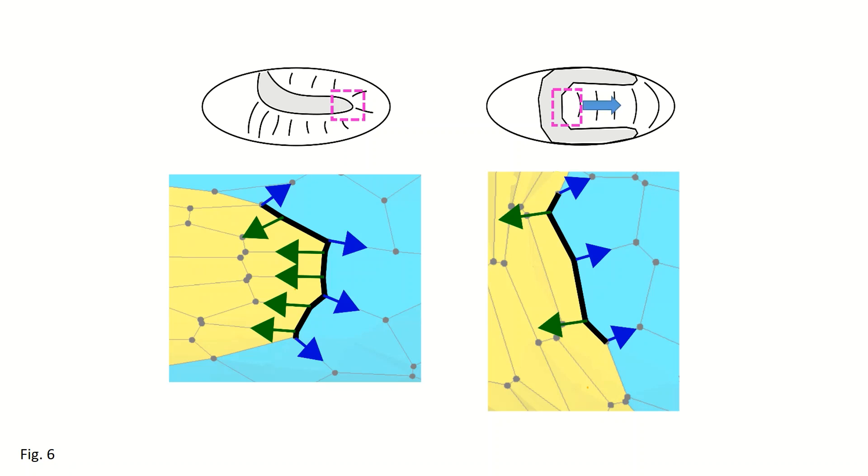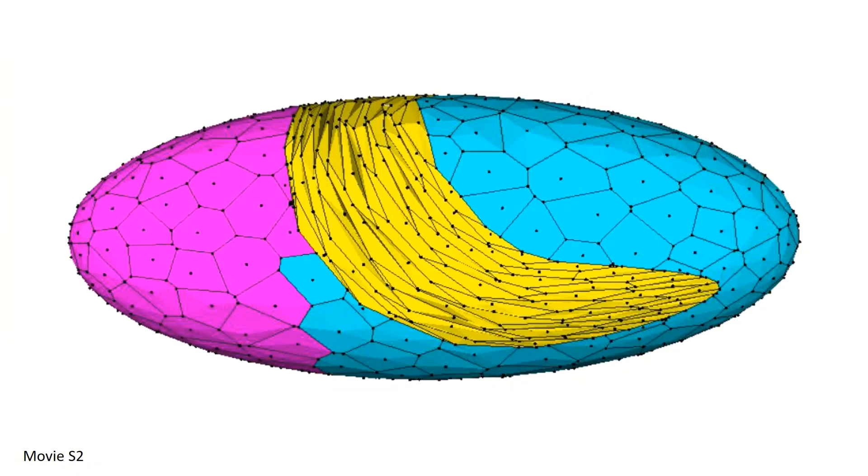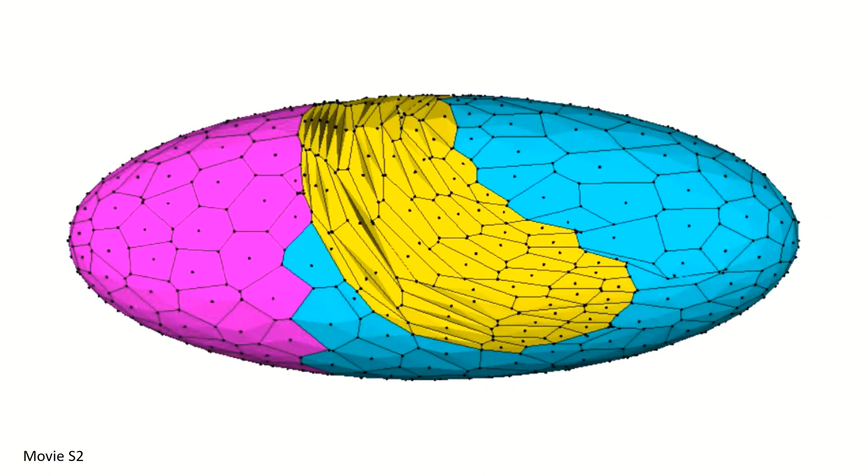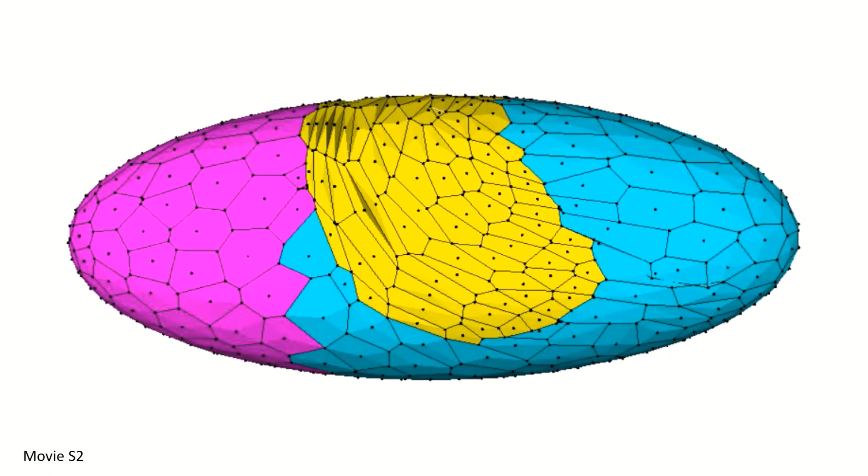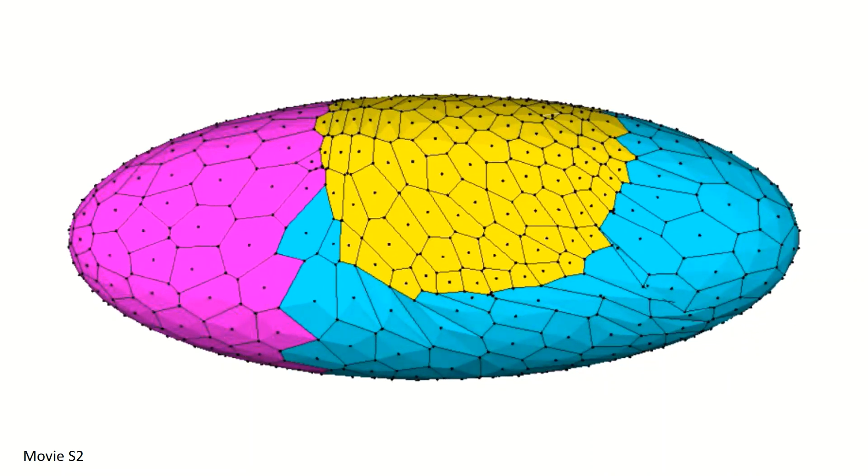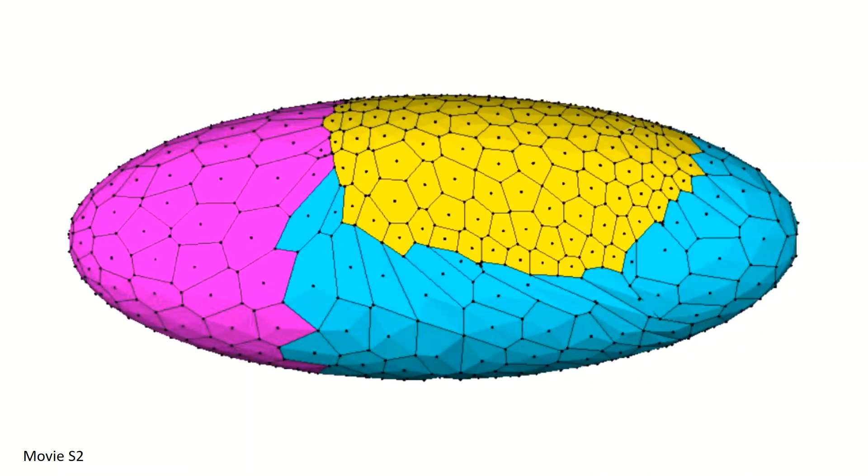Thus, germband retraction is accomplished by using cell geometry to translate cell-level force into patterned tissue-level stress. It will be interesting to see if this use of cell geometry is applied widely during development.